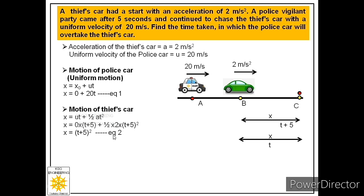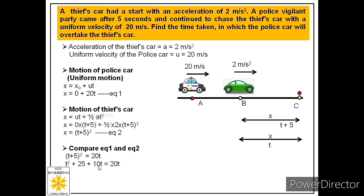We now have two equations with two unknowns x and t. Since the left-hand sides of both equations are the same, we equate the right-hand sides: (t + 5)² = 20t. Expanding using the (a+b)² formula: t² + 25 + 10t = 20t. Moving terms to the left-hand side: t² - 10t + 25 = 0. This reduces to (t - 5)² = 0, giving t = 5 seconds. So the police car will take 5 seconds to overtake the thief's car.